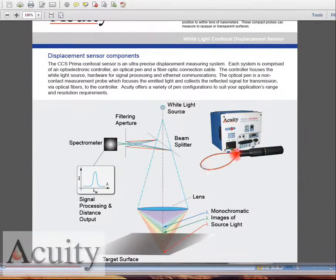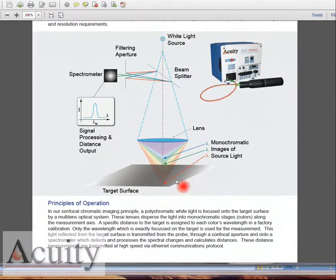This is the technology. Here's the controller and the white light passive probe. What we do is we generate a monochromatic, basically a rainbow here through the lens, and then whatever surface this measurement range comes in contact with, it bounces back up into a beam splitter.